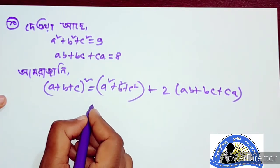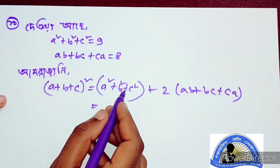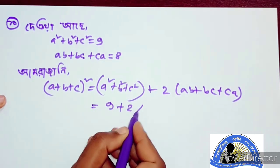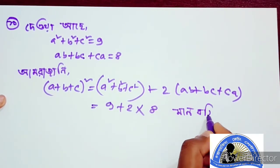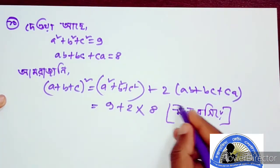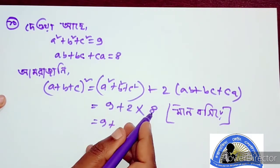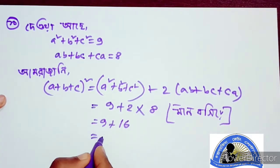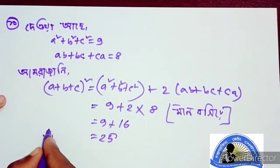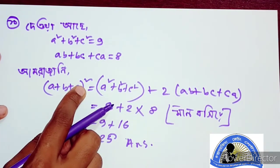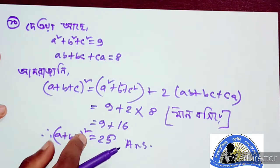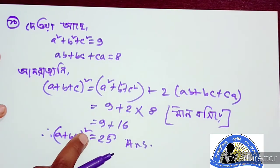Let's write a squared plus b squared plus c squared. We have 9 squared plus 2 into ab plus bc plus ca minus 8. That gives 9 plus 2 into 8, that is 16. So a squared plus b squared minus 10.